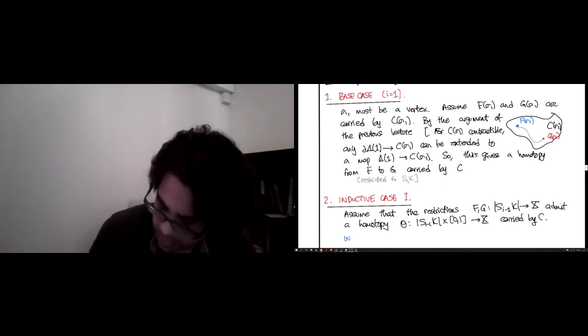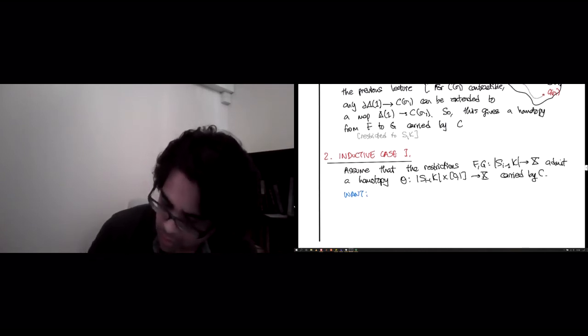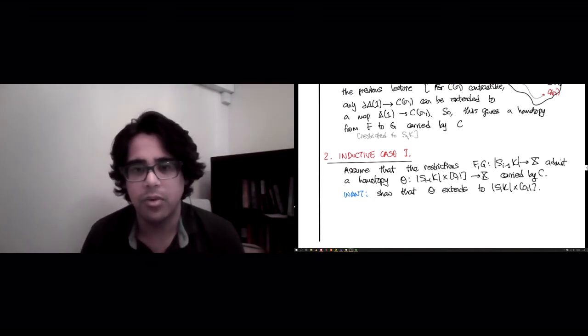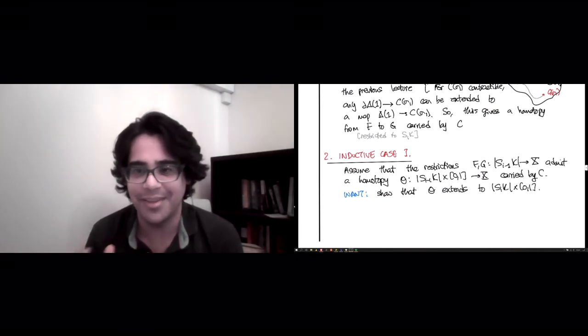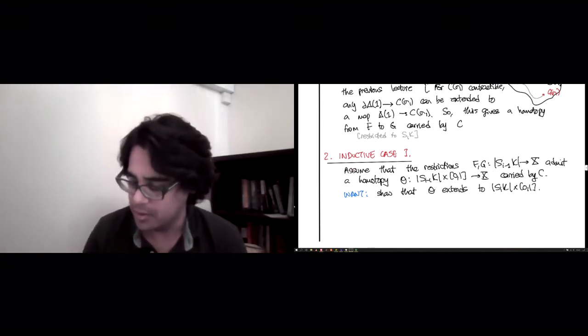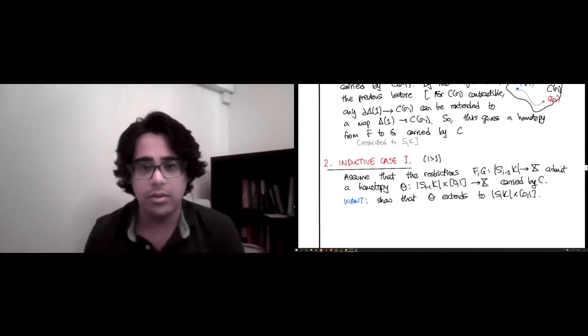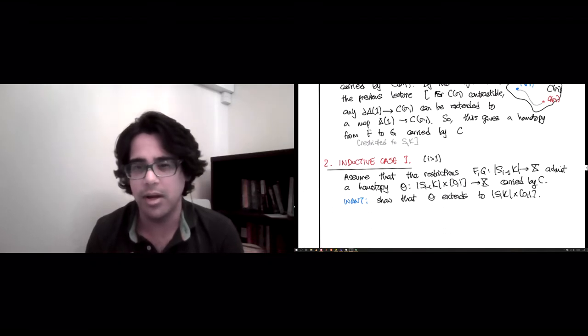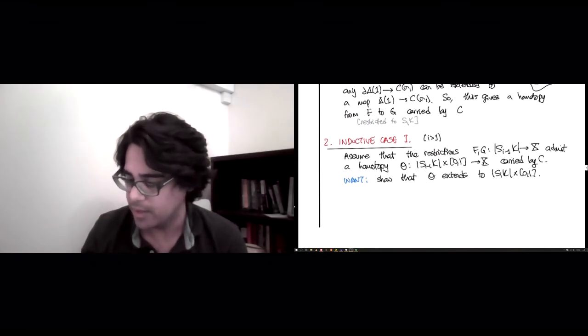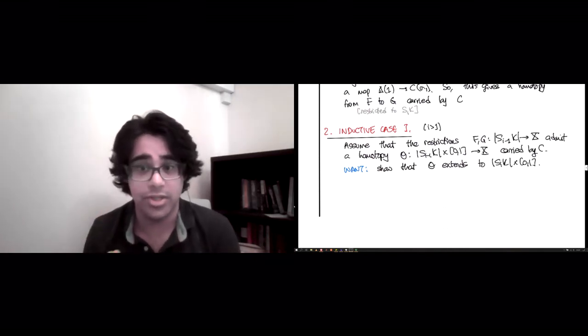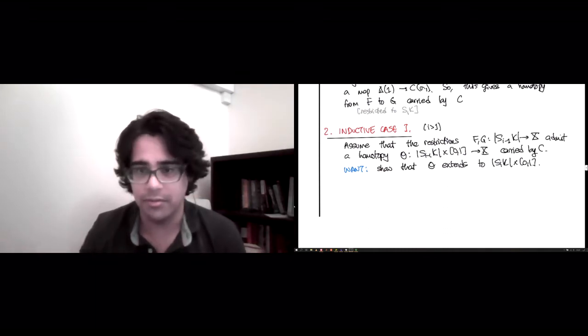What we want is to show that theta extends to S_i(K) cross [0,1] while still being carried by C. So we already have theta defined on most of everything we need. We have it defined on S_{i-1}(K) to X. So this case applies for i bigger than 1 because i equals 1, we've already handled upstairs. So we want to show that theta extends to this S_i(K) cross [0,1]. And the difference between S_i(K) cross [0,1], where we don't have theta defined yet, is the image of the new simplex that you had to add to S_{i-1}(K) to get S_i(K), which is just sigma_i by our definition of S_i(K). So what we need to define theta on this new bit, which is sigma_i cross [0,1].